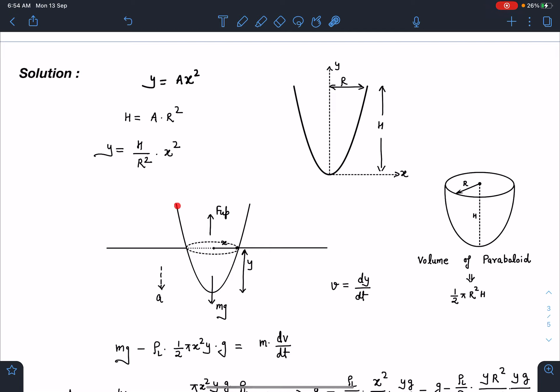So once this paraboloid enters into the liquid, there will be the buoyancy acting on this and there will be its weight and it will be moving with some acceleration of a downwards. And let us say this instantaneous length here which is inside the liquid is y.